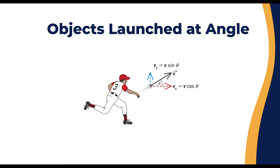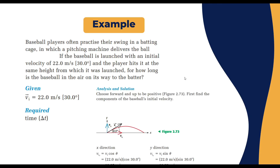In this case, we have an object launched at a certain angle theta. For example, a baseball player throwing the ball at a certain angle with a certain velocity. This velocity is a vector with two components: velocity in the x-direction and velocity in the y-direction. Both values define the trajectory the ball will follow before it hits the ground.